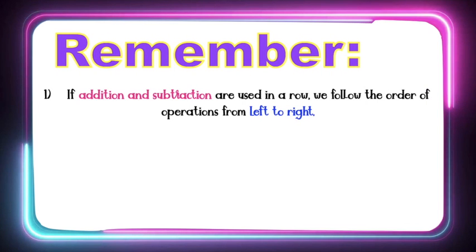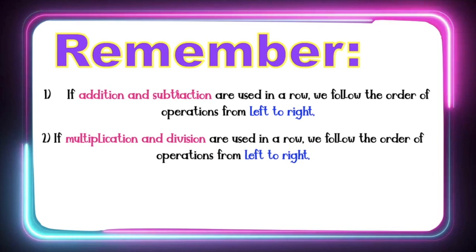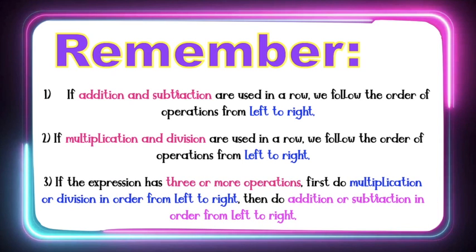Always remember, children: Rule 1 — if addition and subtraction are used in a row, follow the order of operations from left to right. Rule 2 — if multiplication and division are used in a row, follow the order of operations from left to right. Rule 3 — if the expression has three or more operations, first do multiplication or division from left to right, then do addition or subtraction from left to right.